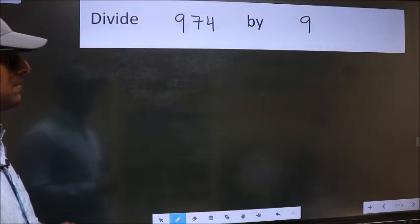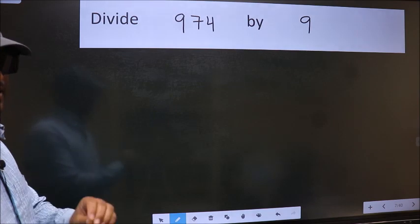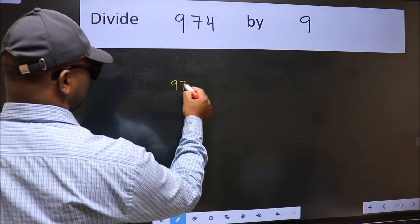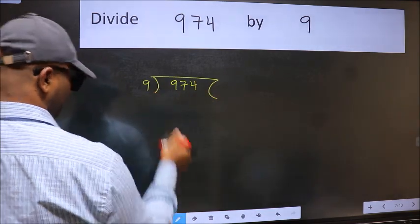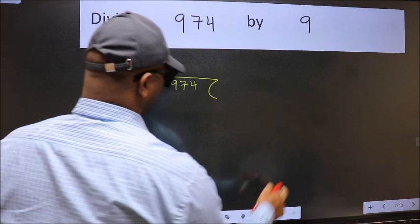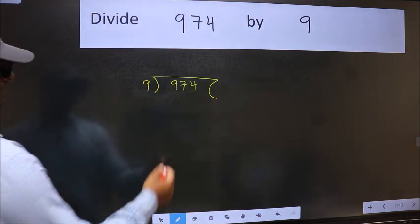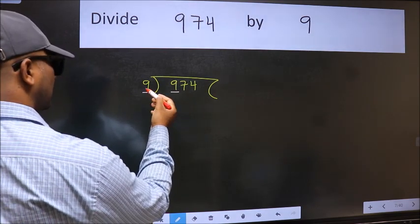Divide 974 by 9. To do this division, we should frame it in this way: 974 here and 9 here. This is your step one. Next, here we have nine and here nine. When do we get nine in nine table? Nine once nine.